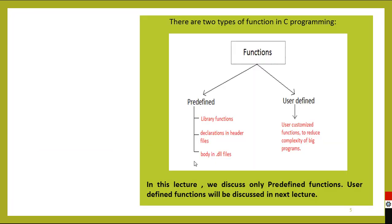There are two types of functions in C programming: predefined functions and user-defined functions. In this video we will discuss about predefined functions. Predefined functions are also known as library functions. C has many inbuilt functions which can make our work easier and code more readable. Inbuilt functions are already defined in C and can be directly used in the program. These functions are grouped in a library which can be accessed by including header files in our program.